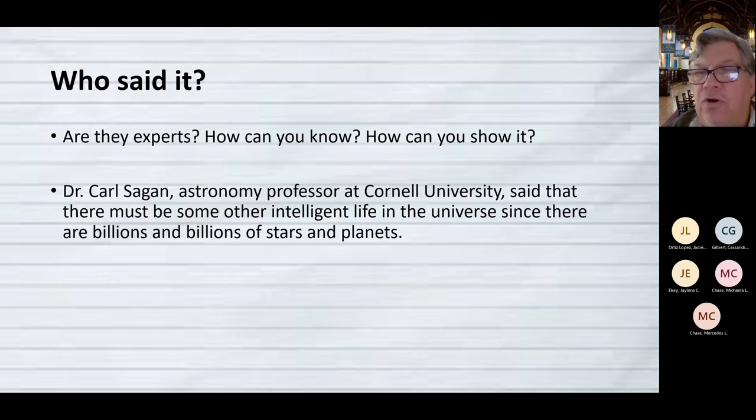So first we want to ask, who said this thing? Is this person a legitimate expert? And how would you know whether or not they were an expert? And how can you show whether or not they're an expert? So in this sentence, I'm referring to someone whose book I actually read and that I really admired. So Dr. Carl Sagan, astronomy professor at Cornell University, said that there must be some other intelligent life in the universe since there are billions and billions of stars and planets. Now that comes from one of his books that's almost 500 pages long. But I've kind of boiled it down to one sentence in my own words, the main point of what the book was about. That's our goal, for you to be able to take whatever it was that you found and render it down to a main idea.